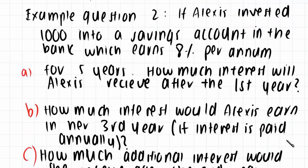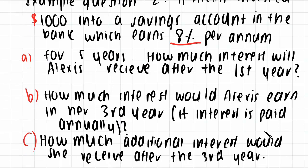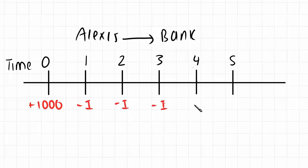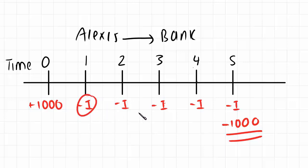Example two: Alexis invested $1,000 in a savings account at a bank which earns 8% per annum for five years. Part A: how much interest would Alexis earn after the first year if interest is paid annually? She invests $1,000 and earns interest every year until she receives it back. Since I is the same every single year, we calculate it once.